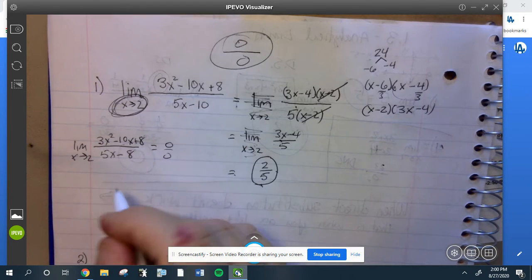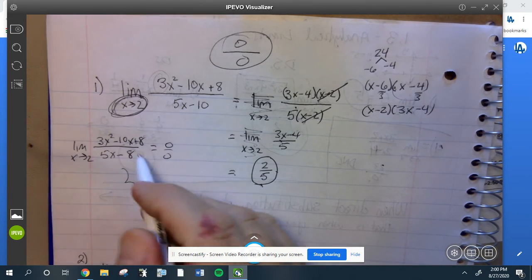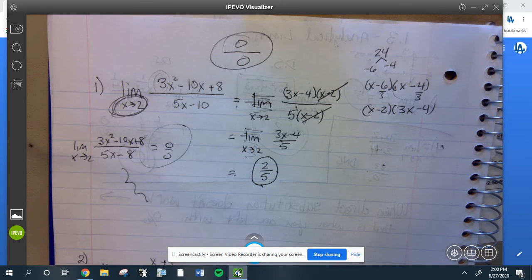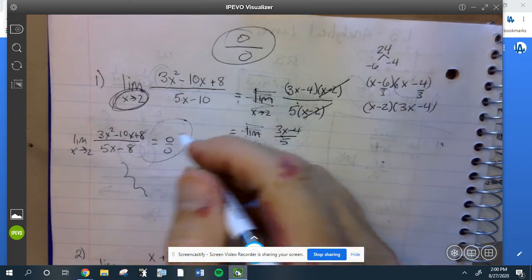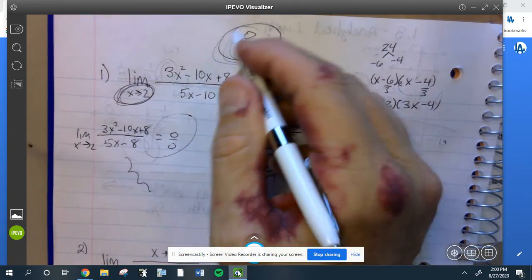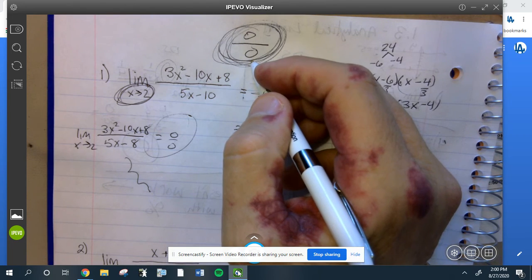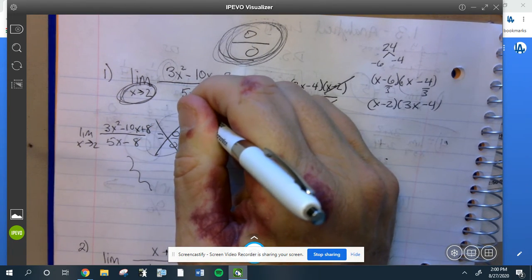This is an automatic deduction of a point because the limit does not equal 0 over 0. That would mean that this limit is undefined. The limit equals two-fifths. So I did write 0 over 0 up here, that's just a notation to myself. Do not put equal 0 over 0.